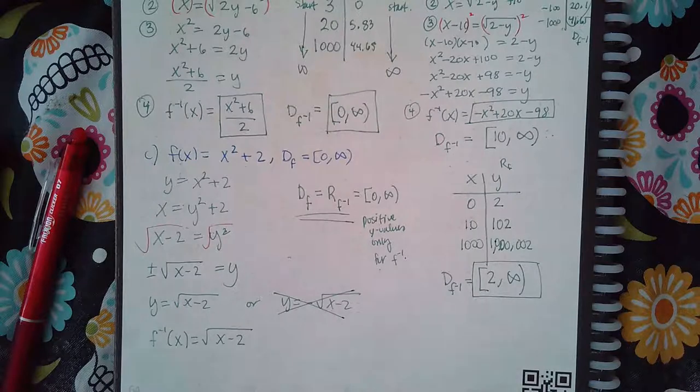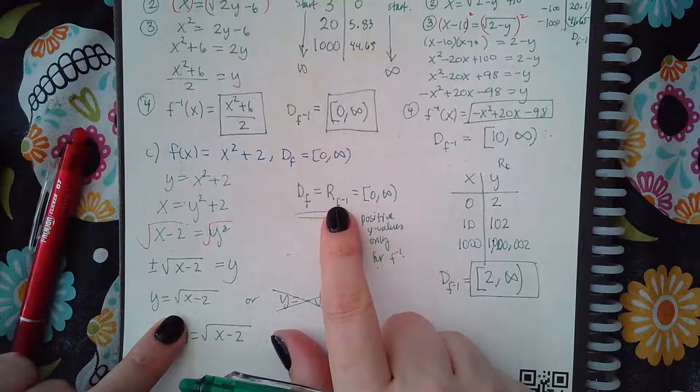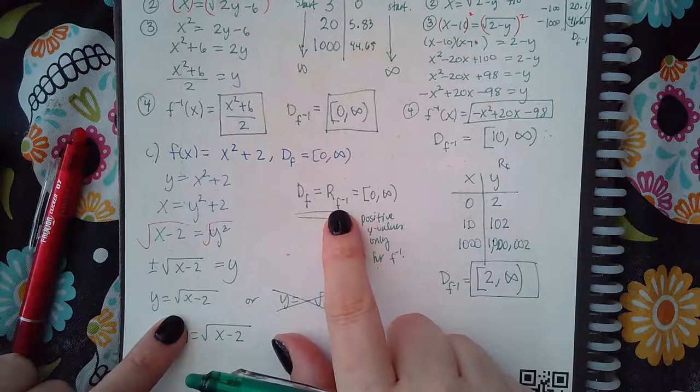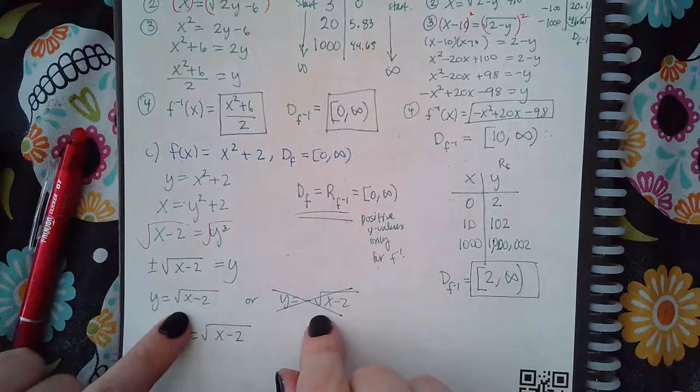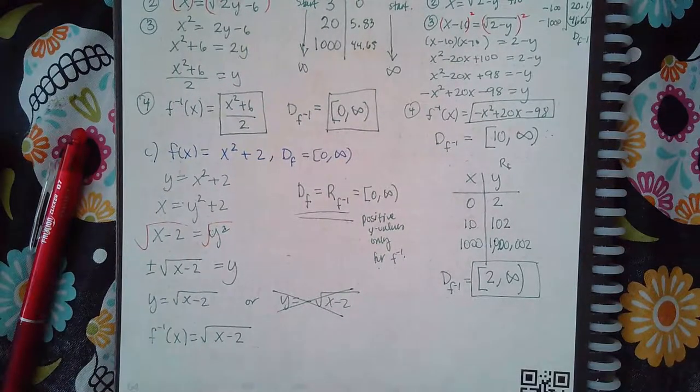Okay. So if you do plus or minus, look at your domain of f, because that's going to tell you what your range of f inverse is going to look like. And so what should your values be? Should your y values be positive? Or should your y values be negative?